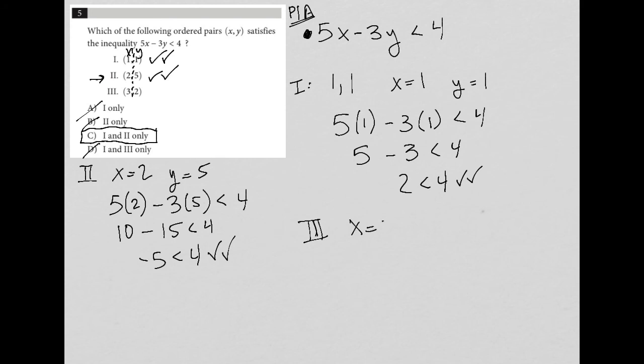So for 3, we have that x equals 3 and y equals 2. Let's see. Is it true that 5 times 3 minus 2 times 2 is less than 4? 5 times 3 is 15. And 2 times 2 is 4. And 15 minus 4 is 11.